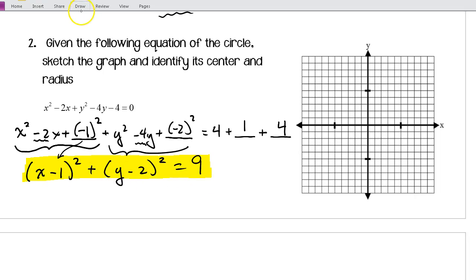And then we've got 4 + 1 + 4 is 9. And there you have your standard form. Okay, once we have this, we know that the center is going to be (1, 2). We know that my radius is going to be the square root of 9 or 3.